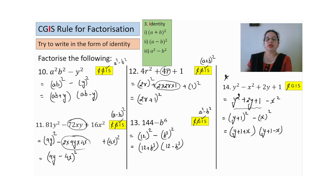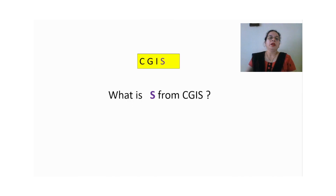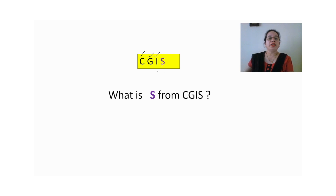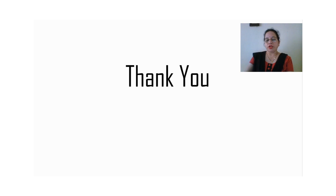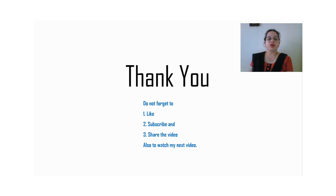So from the CGIS rule: C means common, G means grouping, I means identity — the three standard identities. What is S? Watch my next video to find out what S is. That's all — thank you for watching today's video. Don't forget to like, subscribe, and share the video, and watch my next video.